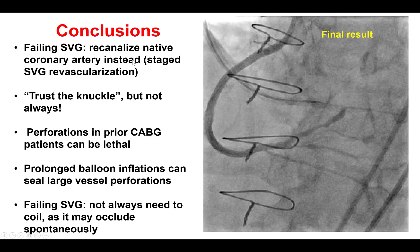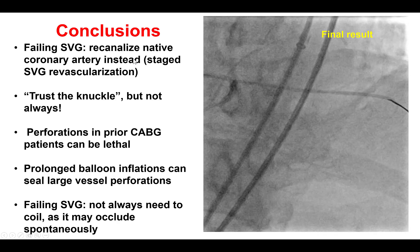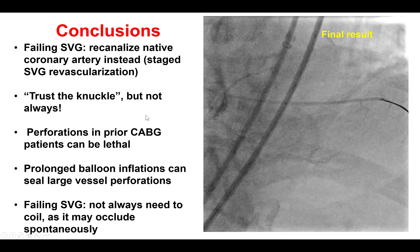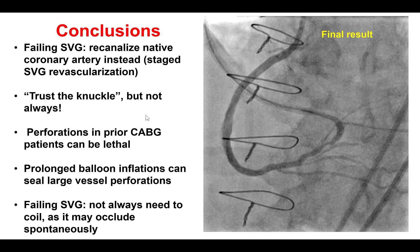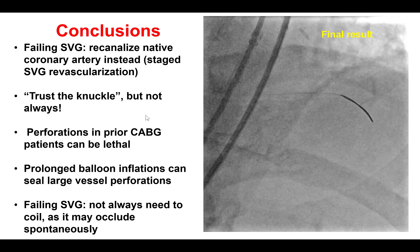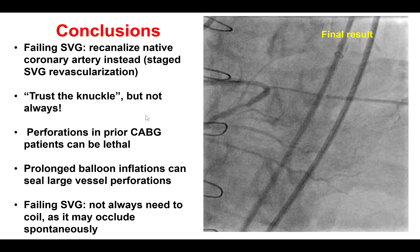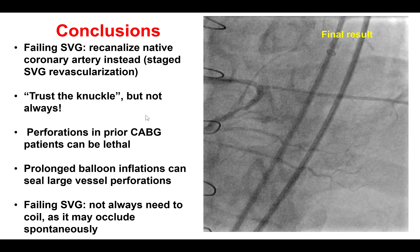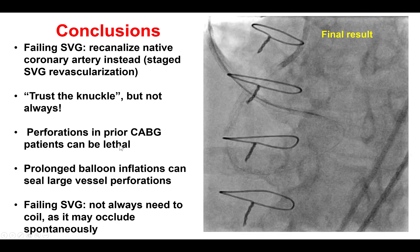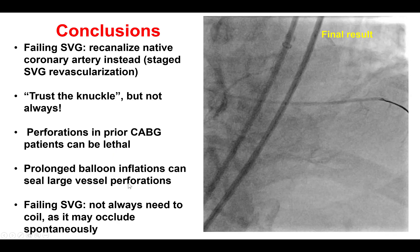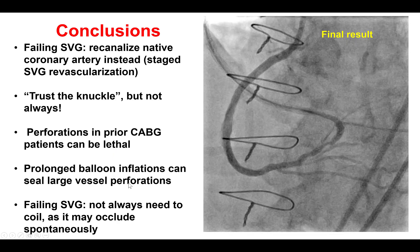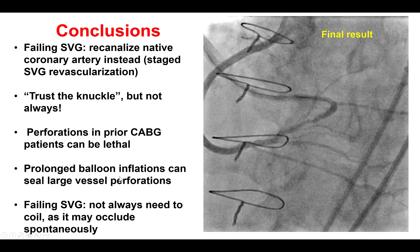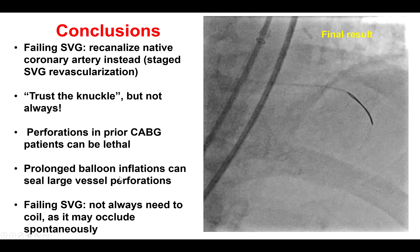Multiple lessons from this case. First, recanalizing the native vessel is generally the preferred approach in patients with recurrent saphenous vein graft failure. Second, the knuckle we usually trust — however, in this case, the knuckle went out of the vessel, probably because we started the knuckle in a branch, and that's why the perforation occurred. Third, perforations in bypass patients can be lethal, and they should be treated as soon as possible. Covered stent is the therapy for large vessel perforations. However, in this case, it could not be delivered. Prolonged balloon inflations were performed and were eventually successful in sealing the perforation.